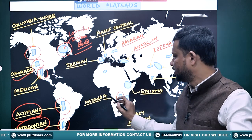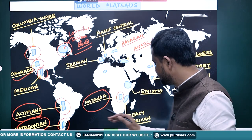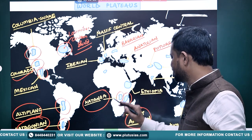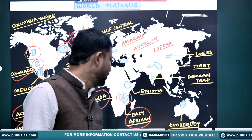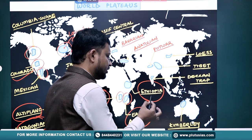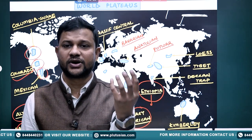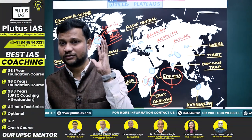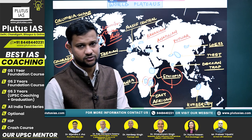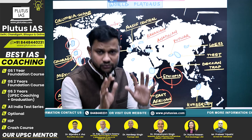In Africa, you will find major plateaus. In the central-southern part lies the Katanga Plateau. To the east, you will find the East African Plateau, covering Kenya, Zimbabwe, and surrounding areas. Then there is the Ethiopian Plateau, known as the water tower of Africa, in the sense that it is the origin of the Nile. So Katanga, East African, and Ethiopian are the major ones to remember in Africa.